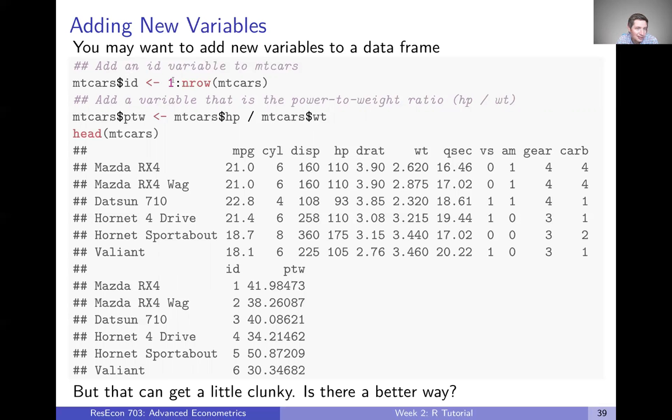In this case, we can assign to that ID variable just one all the way up through the number of rows. So that's just going to go down the rows one, two, three, four, five, six and so on until we hit the bottom of the data frame, just assigning a unique number to each row.